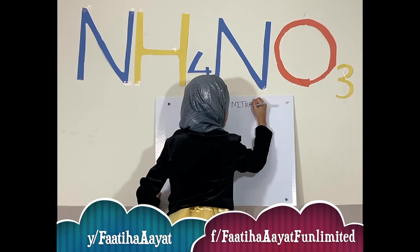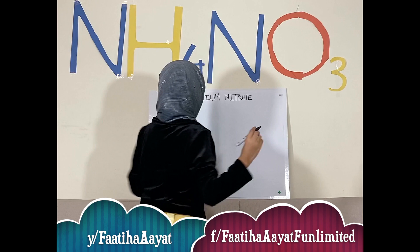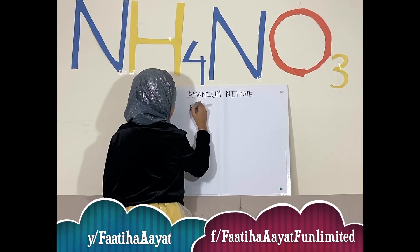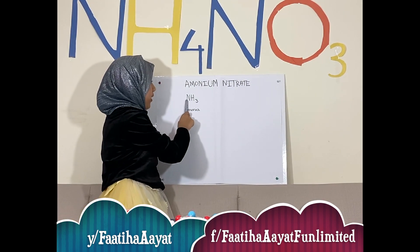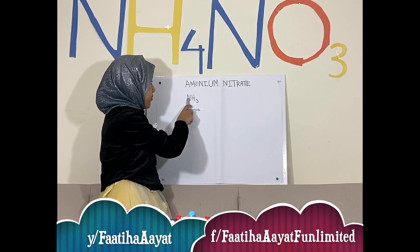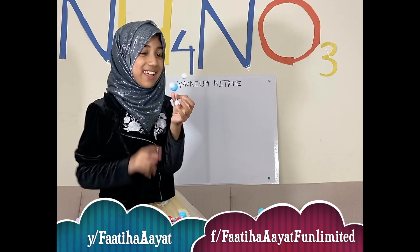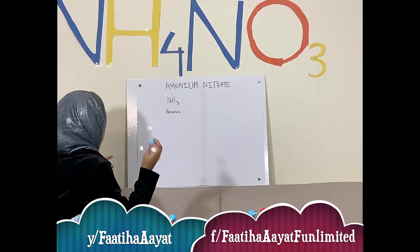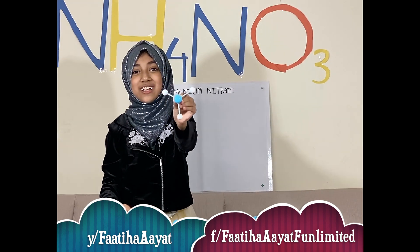It is made out of two compounds. One of the compounds is NH3, which is called ammonia. In one molecule of NH3, there is one atom of nitrogen and three atoms of hydrogen. As you can see in real life, the blue atoms stand for nitrogen and the white atoms stand for hydrogen. This is the real life model of NH3 — one atom of nitrogen and three atoms of hydrogen. So this is ammonia.